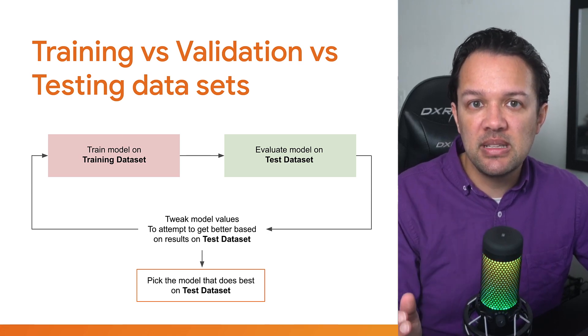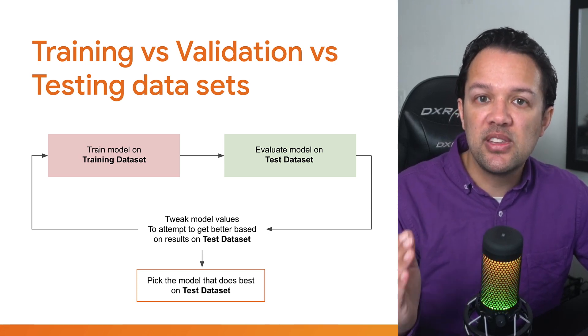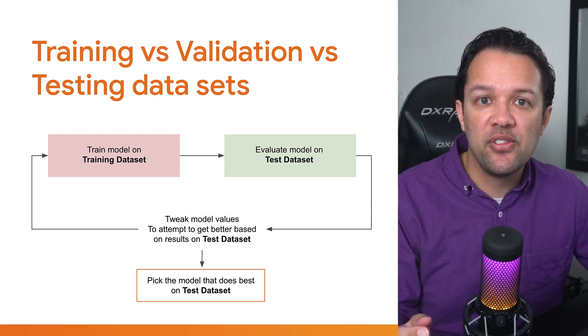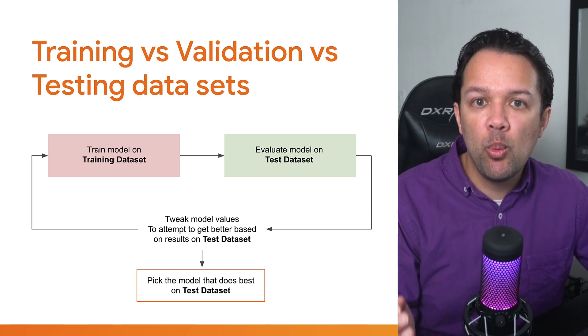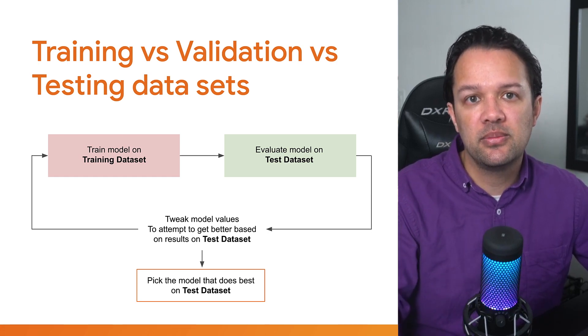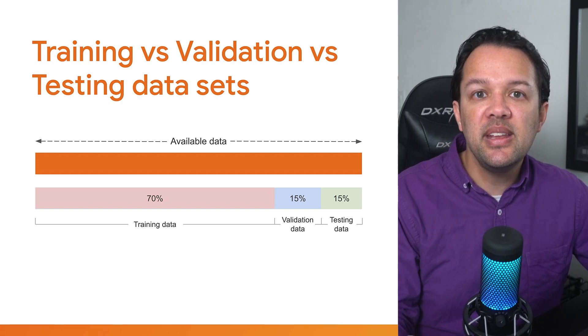Now this is a good starting point, but there's a chance the model will try and change itself to simply perform well on the test data alone. Instead, you can randomly split your available data into three sets.